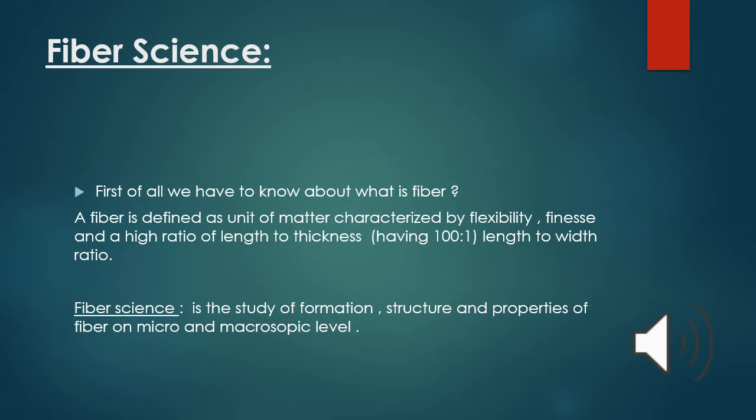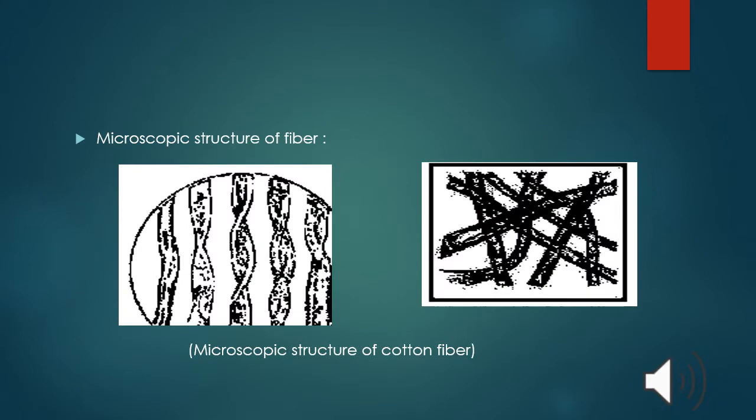Fiber science is the study of formation, structure and properties of fiber on micro and macro level. Microscopic structure of fiber - this is the structure of carbon fiber. It contains ribbon-like structure. It contains hemicellulose and lignan. The fiber made with ether or ester of cellulose which can be obtained from the bark, wood or leaves of plants.